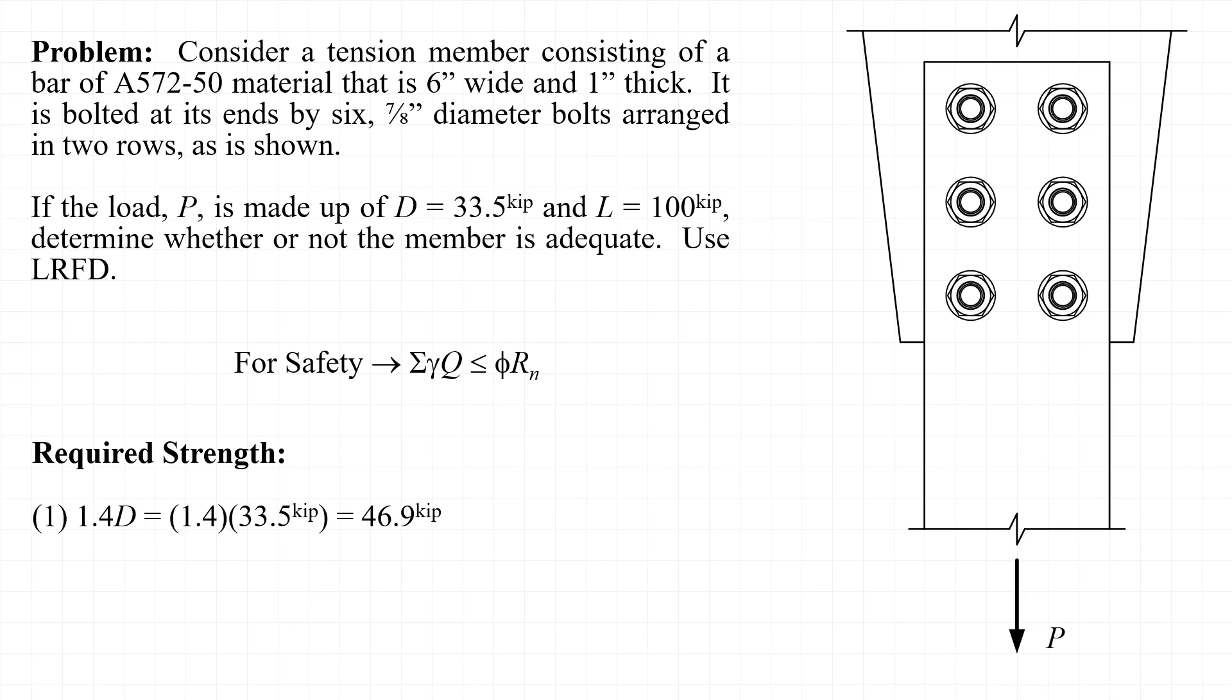As a first step, let's determine the required strength by evaluating the load combinations. The first load combination, 1.4 times the dead load, results in a required strength of 46.9 kips. And the second load combination, 1.2 times the dead load plus 1.6 times the live load, results in 200.2 kips. So the required strength for this member is the sum of gamma times Q equal to 200 kips.